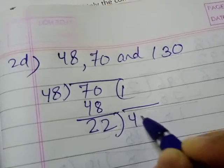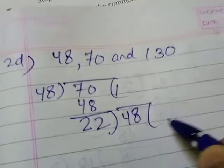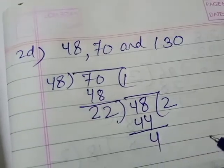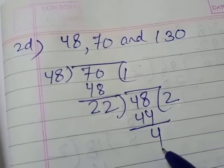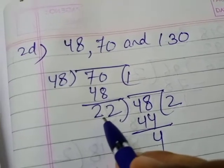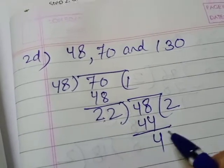So 22: two times 44, four will remain here. Again we have the remainder. When we have the remainder, what do we do? The previous divisor now will become the next dividend.